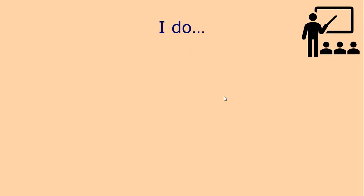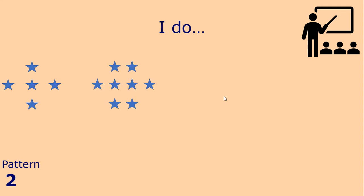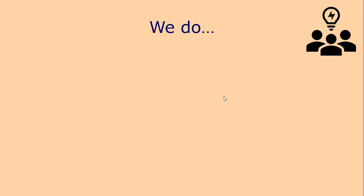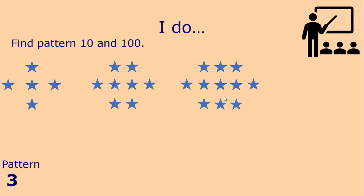We're going to start with something a bit simpler. Here's a pattern of stars. This is what the second pattern looks like, and this is what the third pattern looks like. We've been asked to find what pattern 10 and pattern 100 look like. Pattern one is made up of five stars. Pattern two is made up of eight stars. Pattern three has eleven stars.